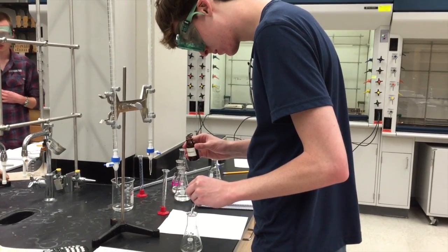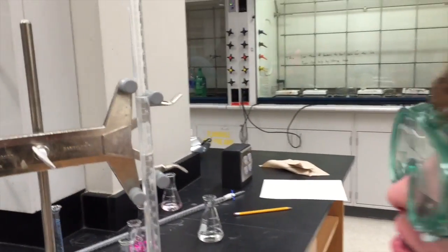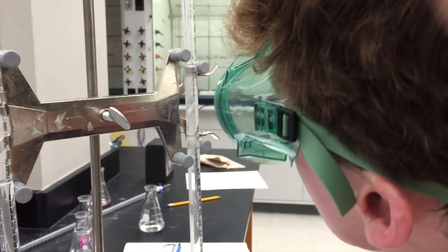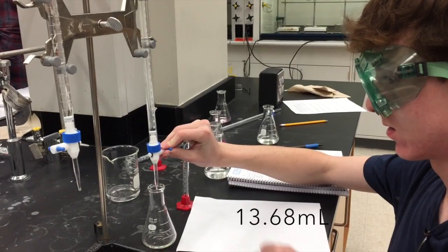Add two drops of phenolphthalein as an indicator to the Erlenmeyer flask. Record the initial volume to one degree of uncertainty past the graduation on the burette. In this case, record to the hundredths place or two decimal places.